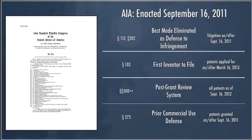The American Invents Act was enacted September 16, 2011 — the product of about 10 years of negotiations in Congress, with many bills, congressional hearings, and debate. The final bill reflects a lot of compromise between stakeholders. Most people would agree it does less than originally intended when patent reform got started many years ago, but it is significant and does change a fair amount of the law.